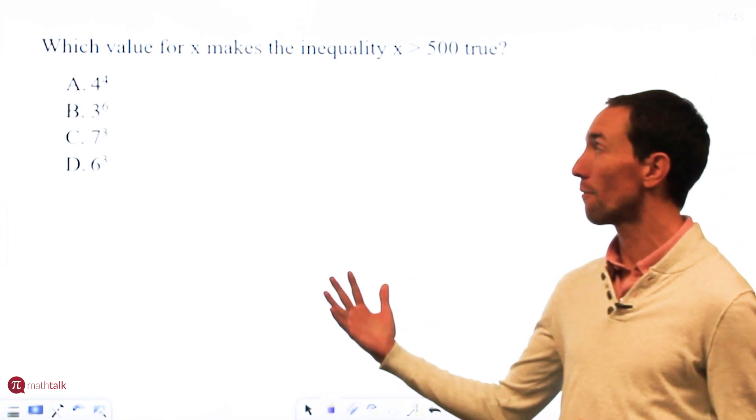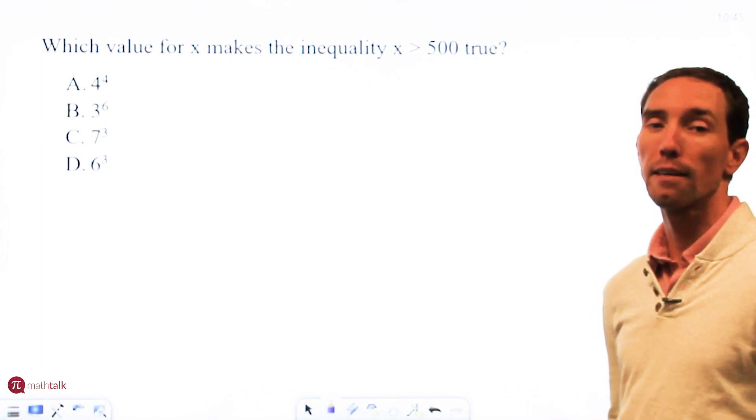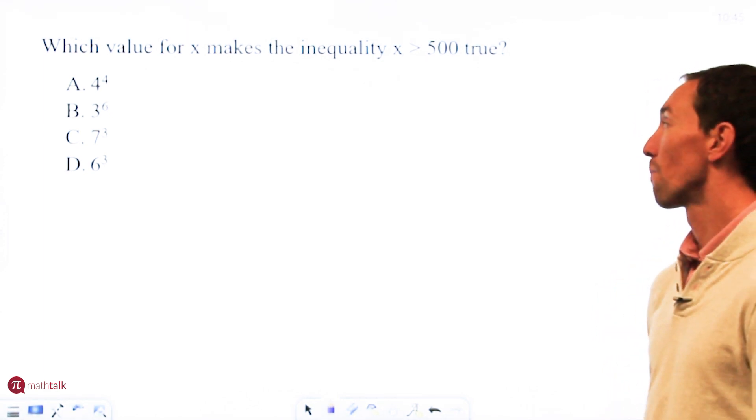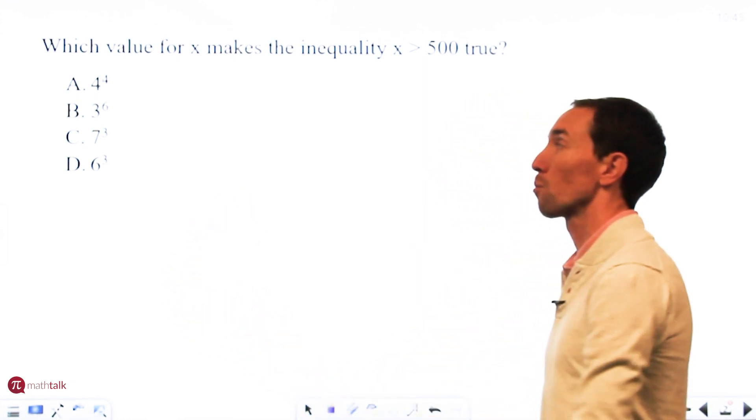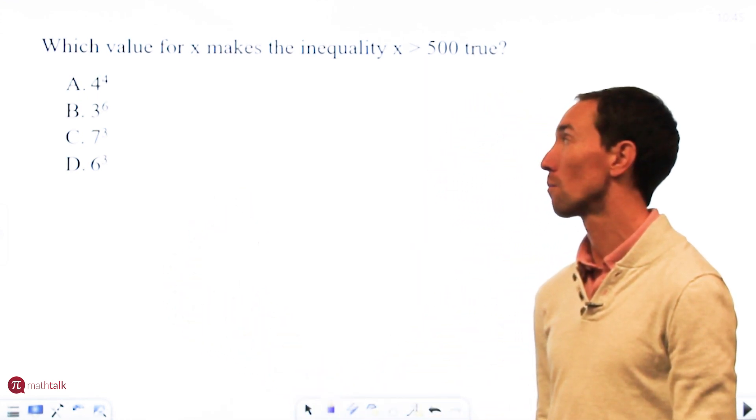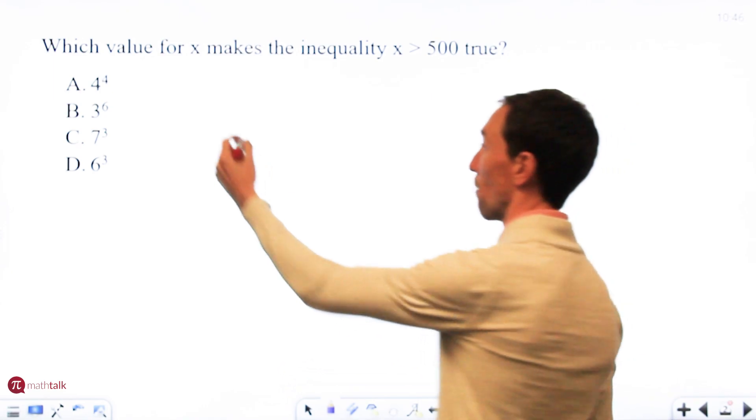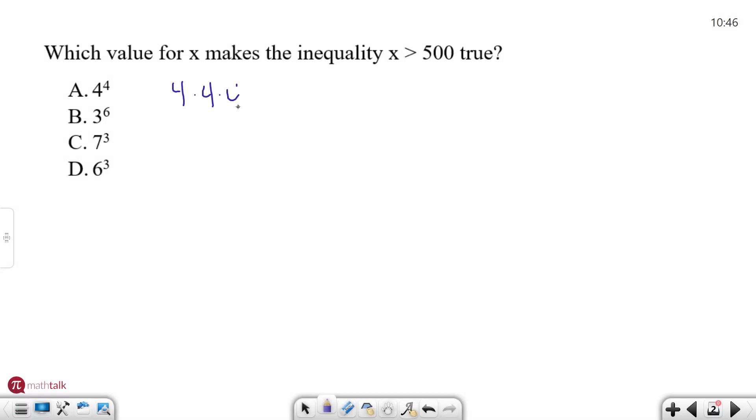You just basically need to figure out which of these values A, B, C, or D is bigger than 500, and that's your answer. So with exponents, the rule is you take the number and you multiply it by itself, however many exponent numbers there are. So for A, we have 4 × 4 × 4 × 4, which is going to be 256. So that's less than 500, so that's out.